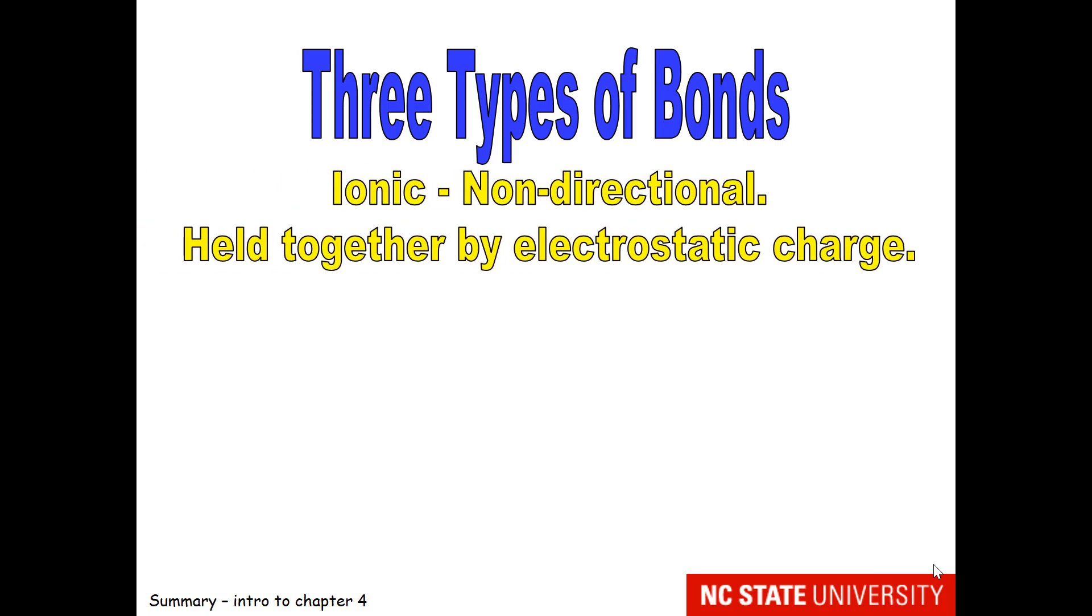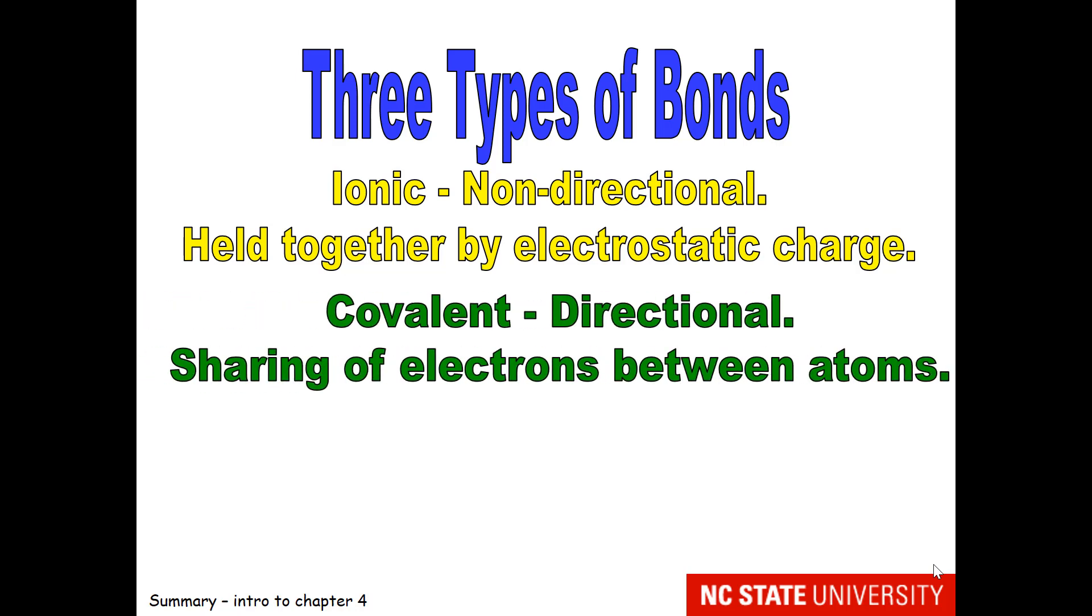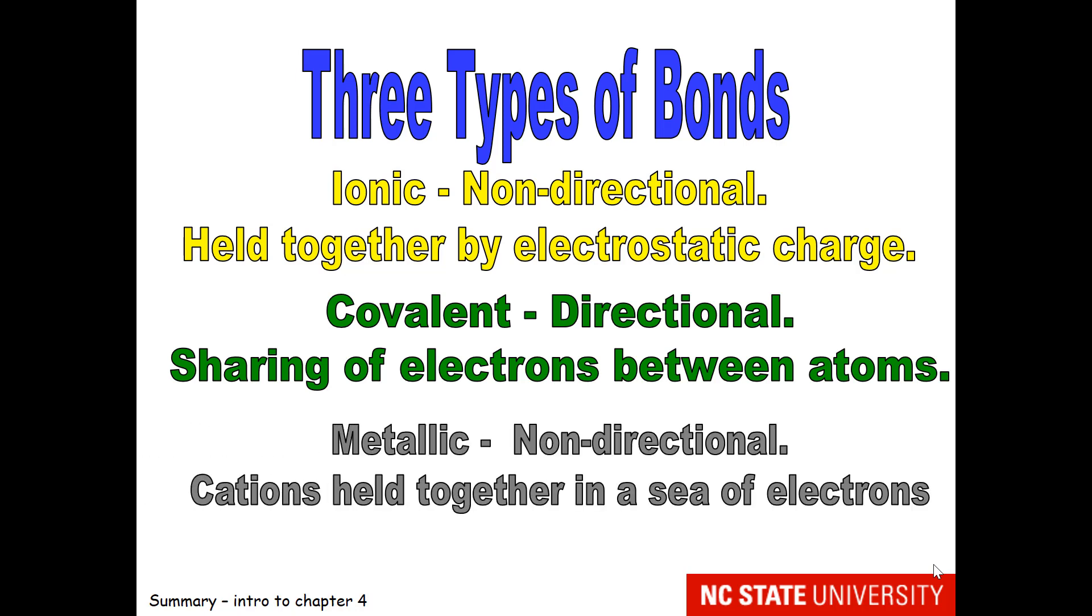Ionic compounds have non-directional bonds, which are held together by electrostatic charge. Covalent bonds have directional bonds, which are the sharing of electrons between atoms. Metallic bonds we'll get to in chapter 8. These are also non-directional, and they can be envisioned as cations held together in a sea of electrons.